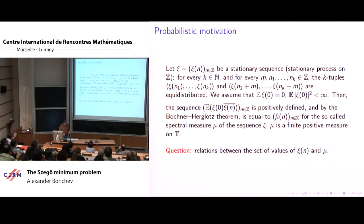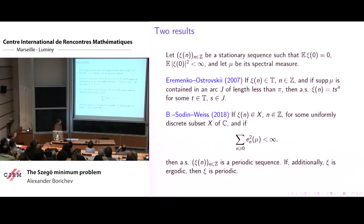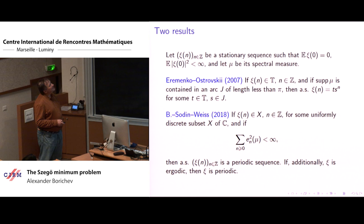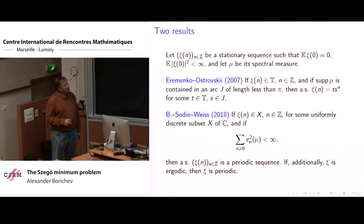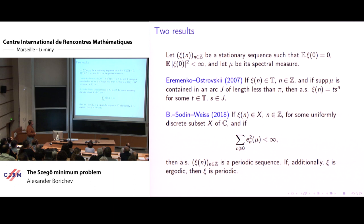Here we have two results which demonstrate this relation. The first result: again, we have a stationary sequence which is normalized with finite second moment, and mu is its spectral measure. Eryminik and Tassarovsky proved that if all the values our sequence takes are unimodular, and if the support of our spectral measure is contained in an arc of length less than pi, then there is a huge degeneration — in fact, our sequence is just a power sequence for some random T and some random S.